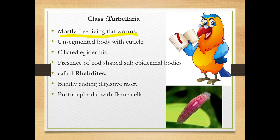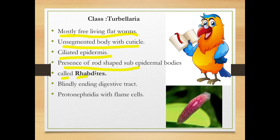Free living means they do not depend on other organisms. The body has no segmentation — it is unsegmented with a cuticle. There is a ciliated epidermis on the skin surface. Rod-shaped sub-epidermal bodies are called Rhabdites, found in the skin — specialized organs occurring in pairs.